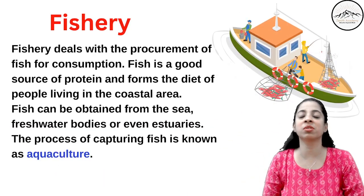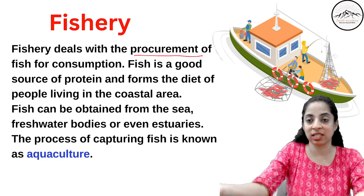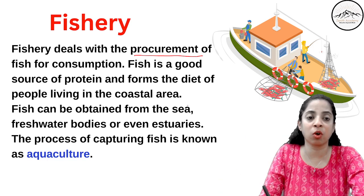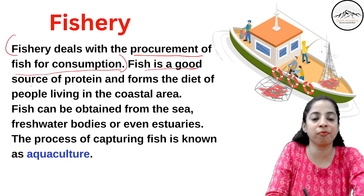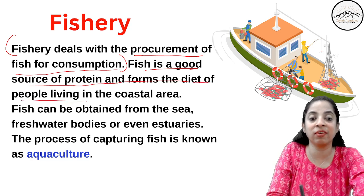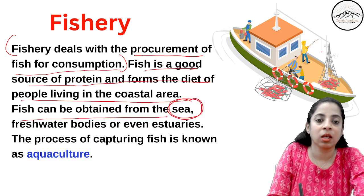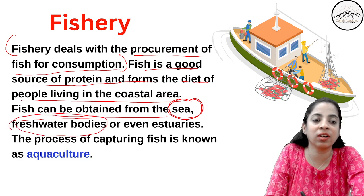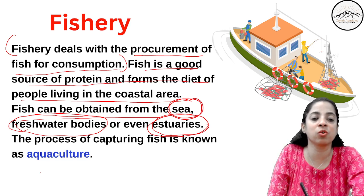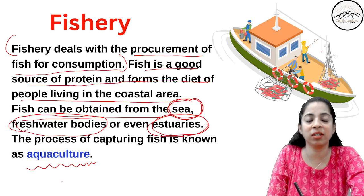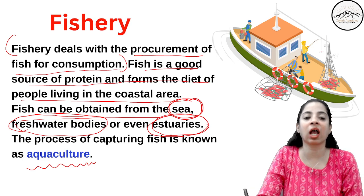Now fishery — this also comes under animal husbandry. Fishery deals with the procurement of fish for consumption. Fish is a good source of protein and forms the diet of people living in coastal areas. Fish can be obtained from the sea, fresh water bodies, or artificial estuaries. The process of capturing fish is known as aquaculture.